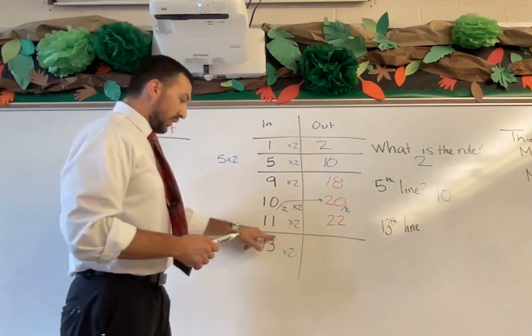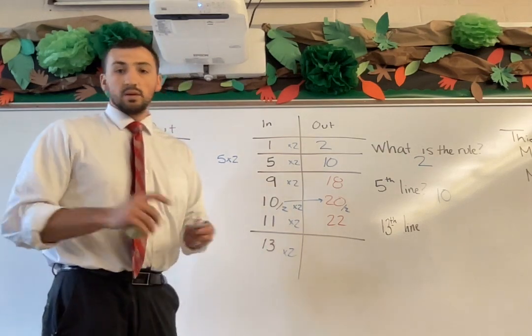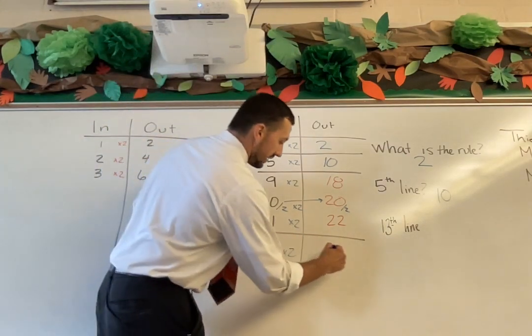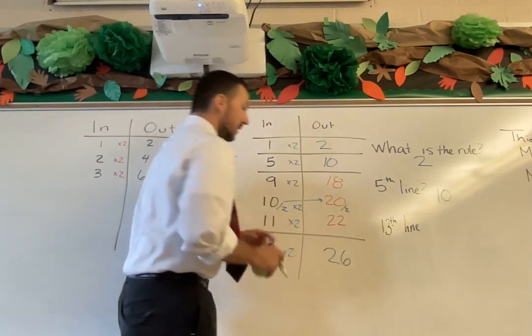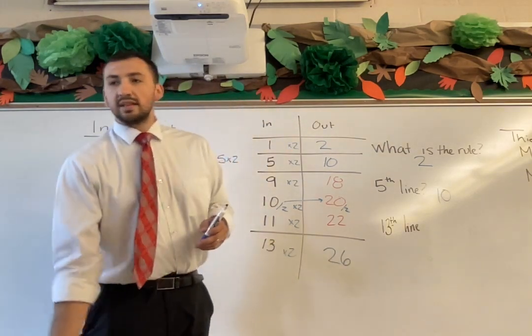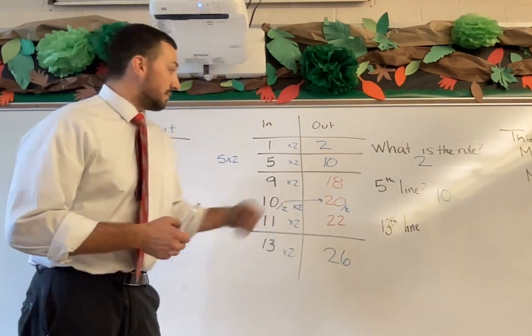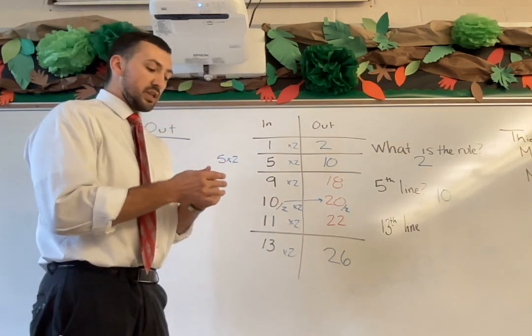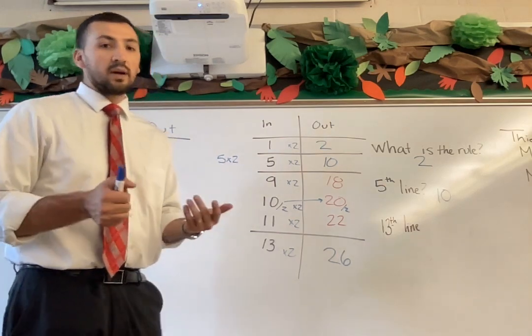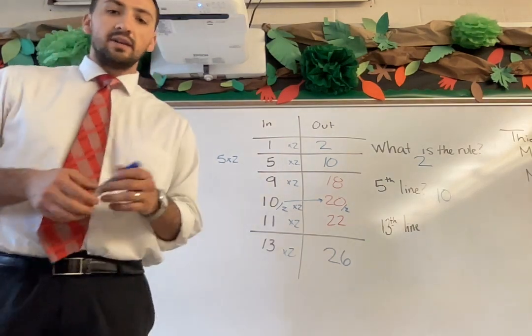And with 13 then, all we need to do is follow the rule. 13 times two is going to be 26. They're going to have questions that are a lot bigger, and they're going to have some that might be small like this. This is just an example of how we've been working the ratio tables so that they can learn some math.